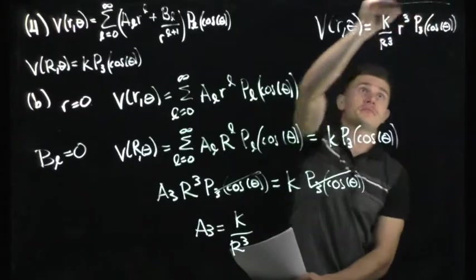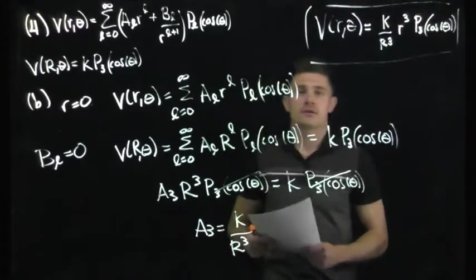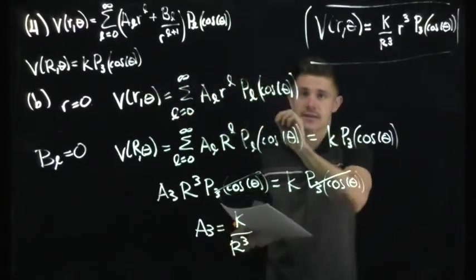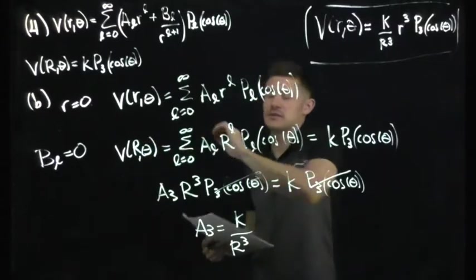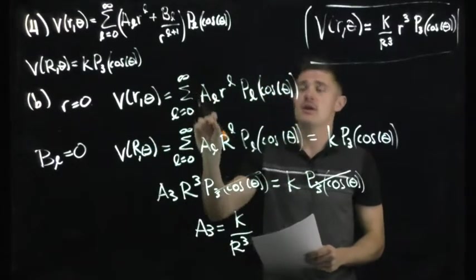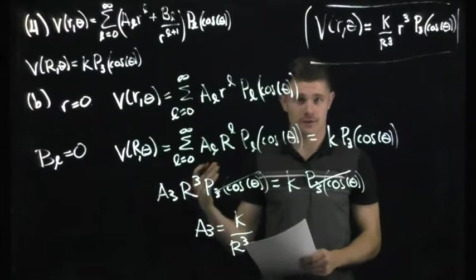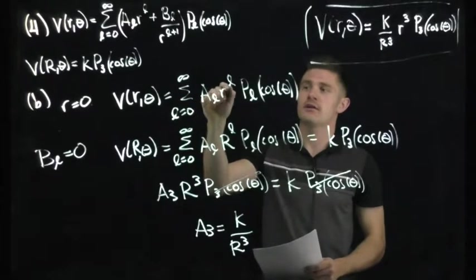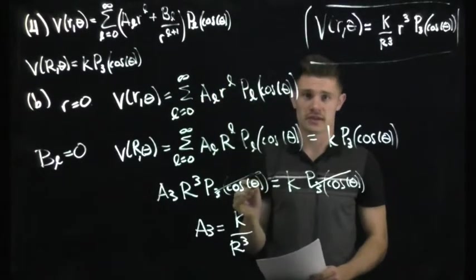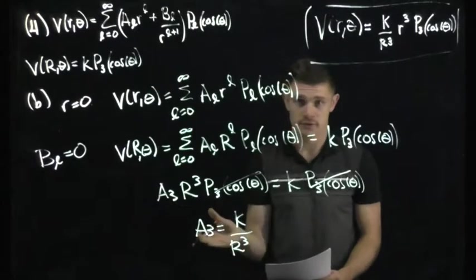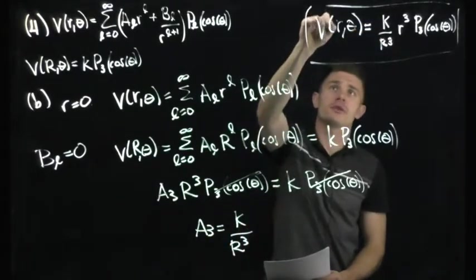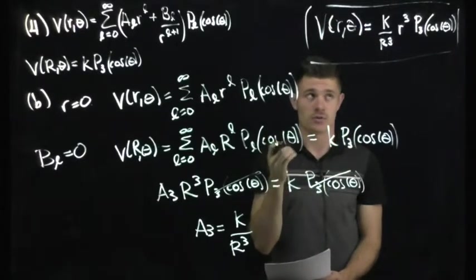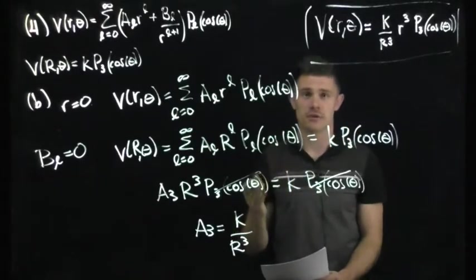So the final answer for part B: the general solution inside the sphere has all B_L = 0, only the L=3 term remains, giving V(r, θ) = A₃ · r³ · P₃(cosθ). Substituting A₃ = K/R³, we get V(r, θ) = (K/R³) · r³ · P₃(cosθ), where R is the radius of the sphere.